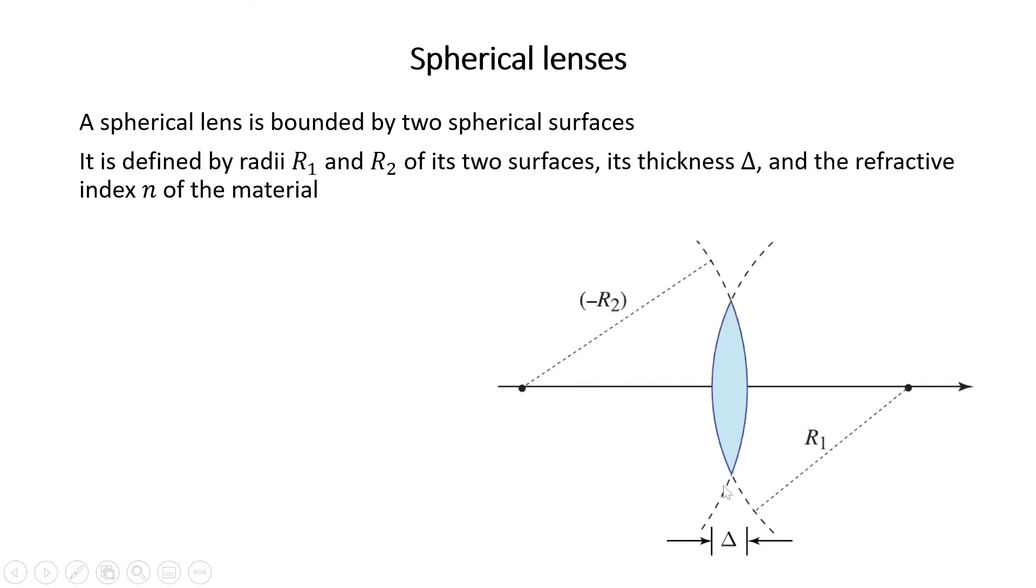R1 is positive because this is a convex surface, and R2 is negative because this is a concave surface. And the thickness of the lens is delta. We usually ignore the thickness of thin lenses in our calculations. Also, the refractive index of the lens is n.